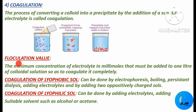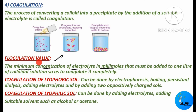We should know about the flocculation value. Flocculation value is the minimum concentration of the electrolyte in millimoles that must be added to one liter of colloidal solution so as to coagulate it completely. It is the minimum concentration of electrolyte in millimoles which should be added to one liter of colloidal solution in order to make it precipitate or to coagulate it completely. This is a very important concept.